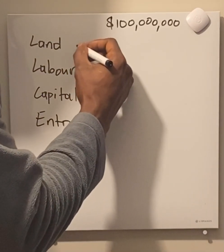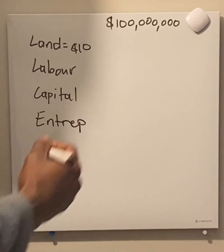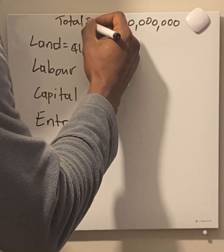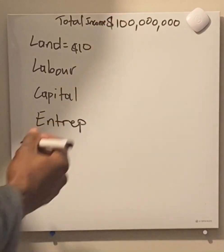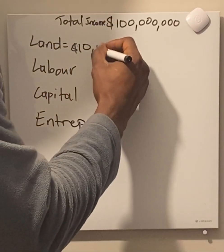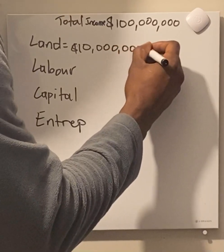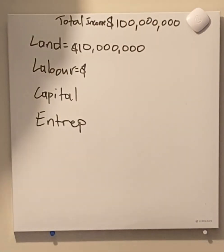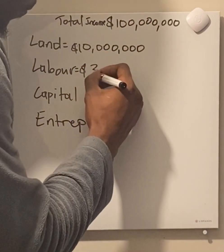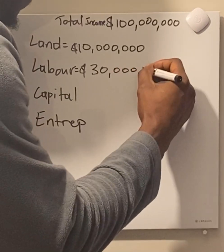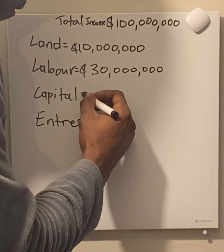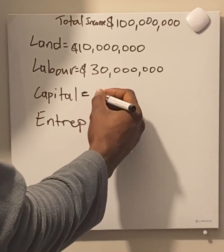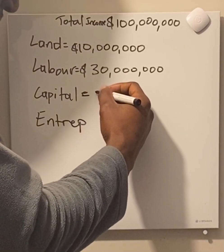Say for instance, land — the owner of land receives from this 10,000, which is the total income. The labor, after working, receives 30,000. And then for your capital, you give a loan or whatever the case may be, your interest then becomes, say, 40.